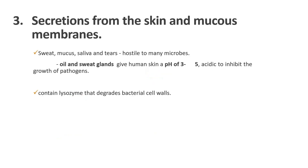The third one is the secretion from the skin and mucous membranes. Sweat, mucus, saliva, and tears are hostile to many microbes due to the presence of oil and sweat glands that give human skin a pH ranging from 3 to 5, which is acidic enough to inhibit the growth of pathogens. These secretions also contain lysozyme that degrades the bacterial cell wall.